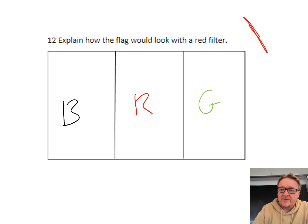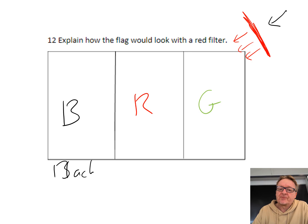If you've got a red filter and light is shining, the only color that can get through is red. The black one will still look black because the red is absorbed. The red will look red because red light hits it and bounces back. The green will look black because the green will absorb the red.